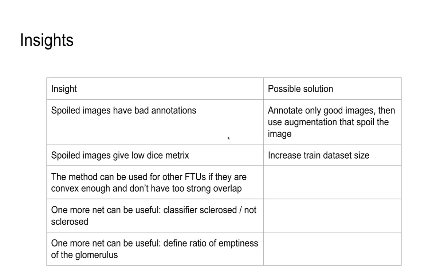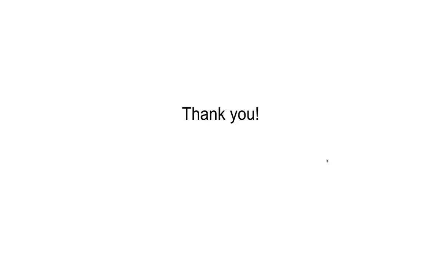This method can be used to detect other objects, if the objects are convex enough and don't have strong overlap. Also, the best way to use the method is to detect all glomeruli — including sclerosed glomeruli and empty glomeruli — because it is simpler for the net, and then use a separate net to classify whether it is a clear sclerosed glomerulus or an empty one. That's all, thank you.